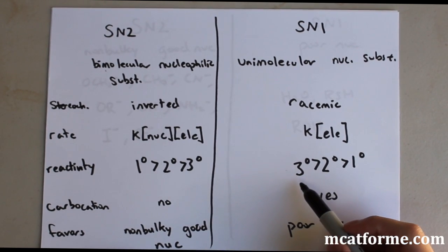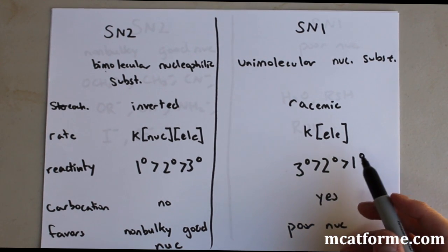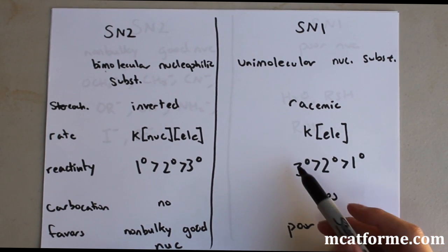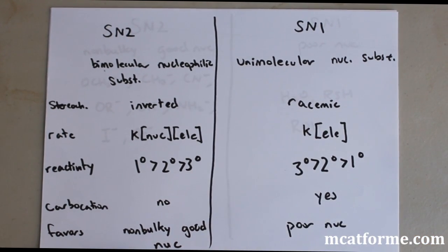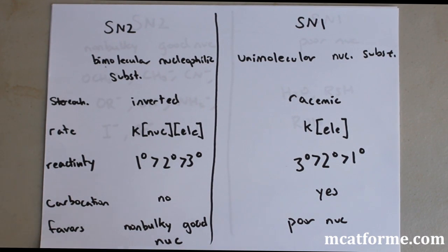Because remember when we went over carbocation stability, tertiary was the most stable. That's why it's going to be the most reactive. The carbocation in the tertiary position is going to want to be formed most likely. That's why now this tertiary carbocation will form our final molecule.